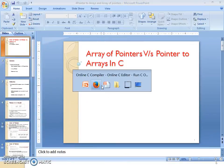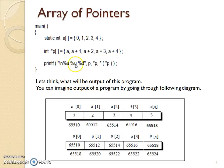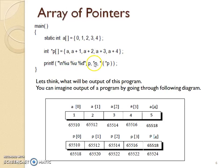Now the program displays three different values. What is P? P is the array of pointers whose base address is 65518, so that gets displayed first. Next, value at address P — the value at address location 65518 is 65510, so it displays 65510. And lastly, double pointer P: the value at address P is 65510, and the value at address 65510 is nothing but 1, so it displays 1.